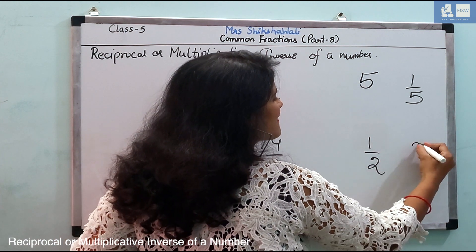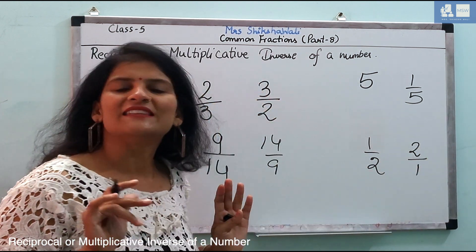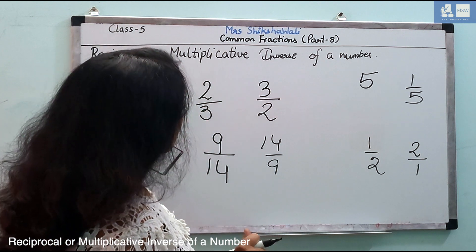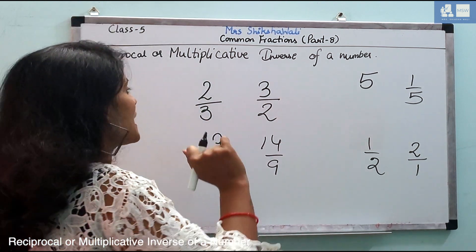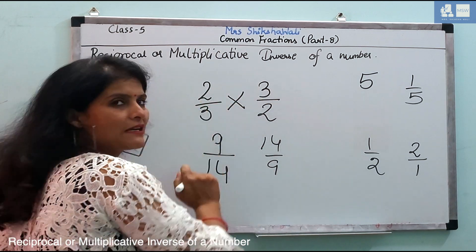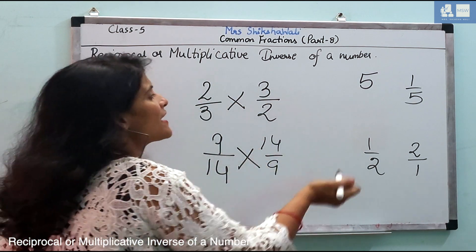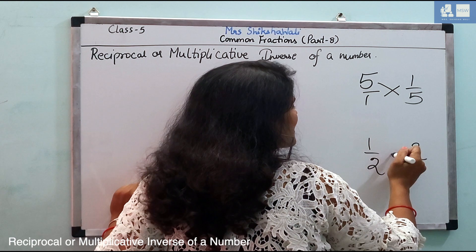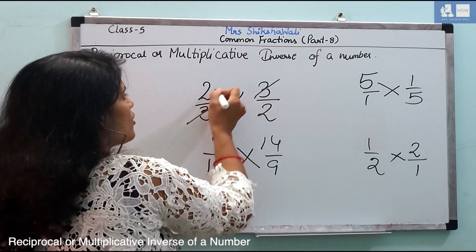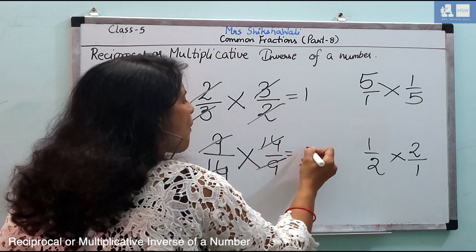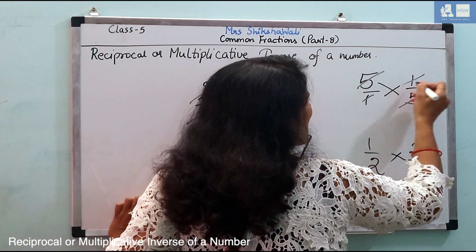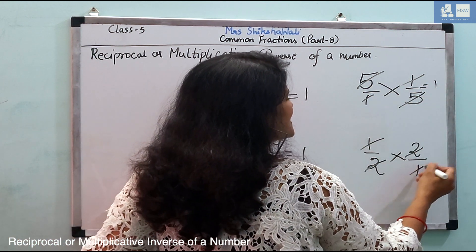Agar 1 by 2 hai, to iska reciprocal hooga, 2 by 1. Ab, yeh reciprocal hootet hai, aur multiplicative inverse bhi hootet hai. Kuiyoky jiab ham yin ka product lethe hai, inki multiply kertye hai, inki multiply karengye jab, tab kya hootahe, result jo hoota hai, woha ata hai, one.